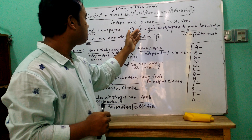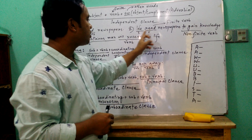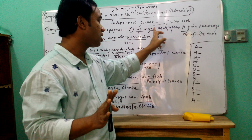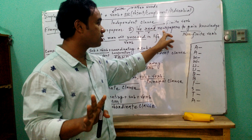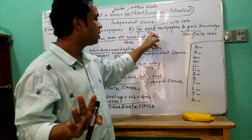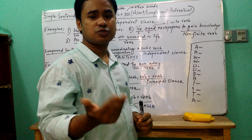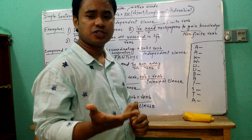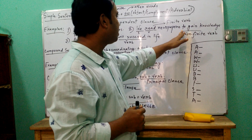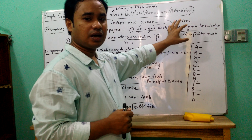Second example: 'We read newspapers to gain knowledge.' The subject-verb combination is a clause and this is an independent clause, making it a simple sentence. 'Newspapers' is the object. 'Read' is the finite verb and 'to gain' is the non-finite verb. A non-finite verb is not able to express meaning on its own — we can't make a sentence with only a non-finite verb. So this is still a simple sentence.